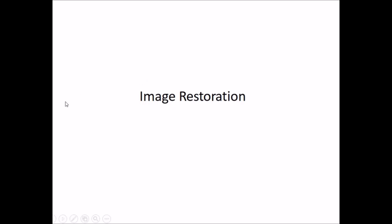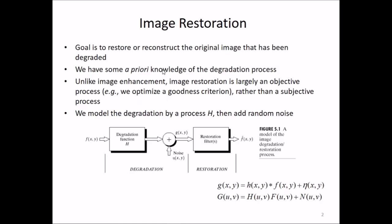Let us talk about image restoration. As the name suggests, this is restoring an image. The goal is to restore or reconstruct the original image that has been degraded. We have some a priori knowledge of the degradation process. Unlike image enhancement, image restoration is largely an objective process, so we optimize a goodness criteria rather than a subjective process. We model the degradation by a process H and then add random noise.